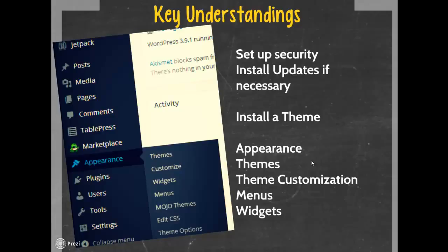I will talk to you about how to install a theme. We're going to talk generally about appearance, themes, theme customization, menus, and widgets. The important part about WordPress is that once you understand these six basic areas — themes, appearance, customization, menus, widgets, and media — you pretty much have a good understanding of how to manipulate your WordPress. Those are the big items.